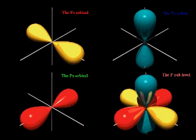Each sublevel is made of orbitals. If you want to find the orbital orientation of an electron, you can easily find a magnetic quantum number. A max of 2 electrons each orbital can hold. And according to Hund's rule, they first go to one that's unfilled. Two electrons sharing an orbital must have the two spin quantum numbers plus half and negative half.